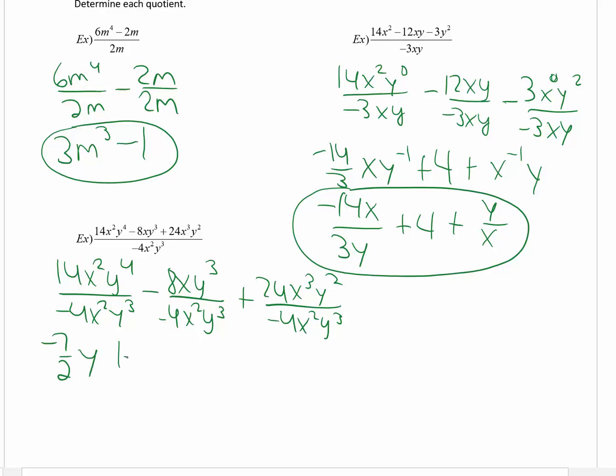Negative divided by a negative is a positive. 8 divided by 4 is 2. x divided by x squared, that's x to the negative 1st. And y cubed divided by y cubed is 1, so they divide out. 24 divided by negative 4 is negative 6. x cubed divided by x squared is x. And y squared divided by y cubed is y to the negative 1st.